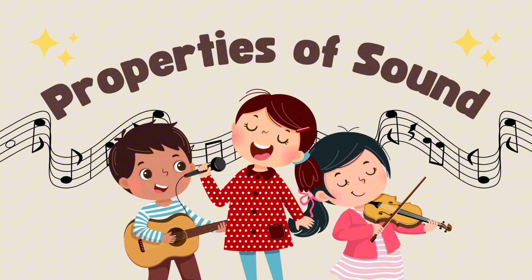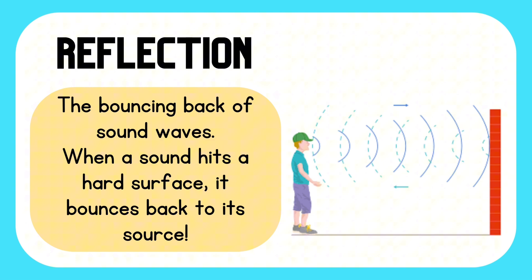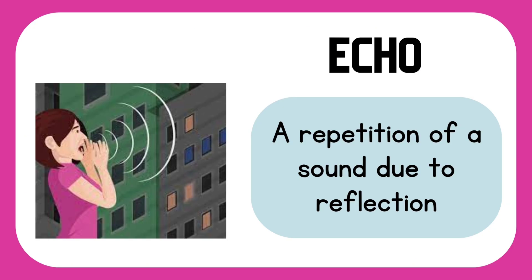Now let's proceed to the properties of sound. The first property of sound is reflection — the bouncing back of sound waves. When a sound hits a hard surface, it bounces back to its original source. Have you ever tried shouting in a certain place and then suddenly heard the same sound echo back? Well, that is an echo — a repetition of a sound due to reflection.